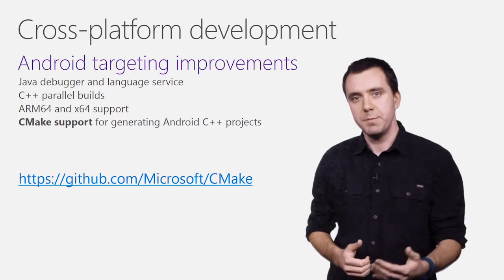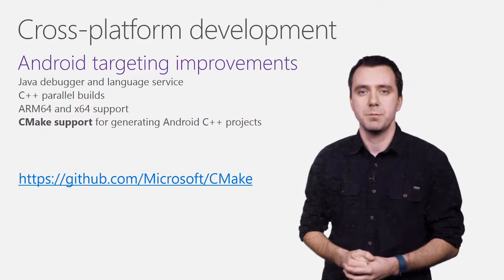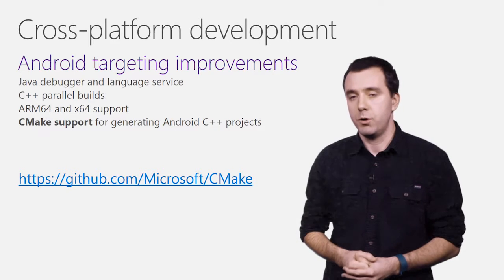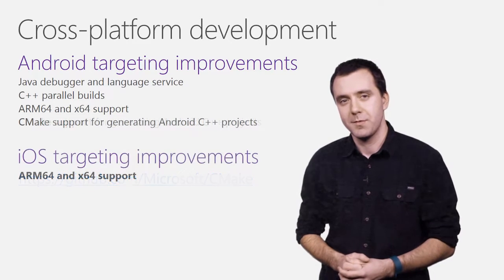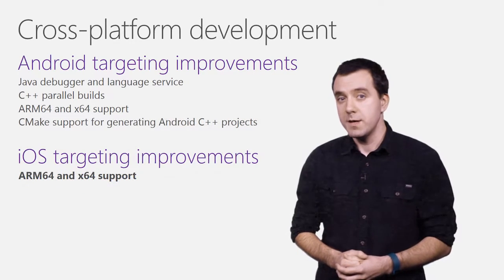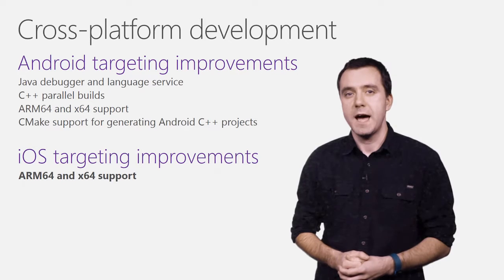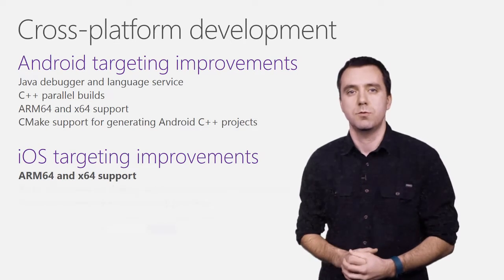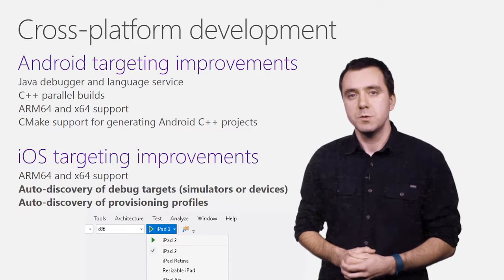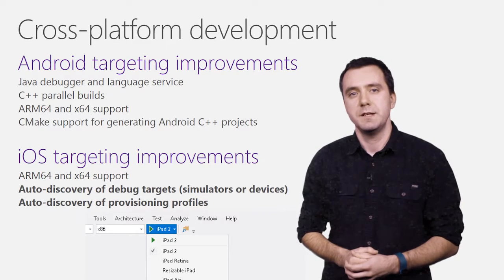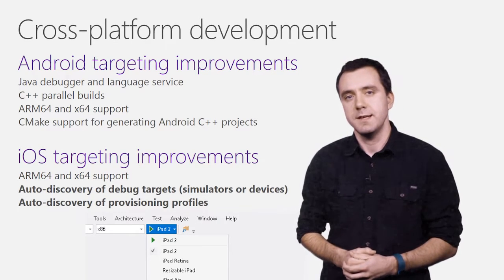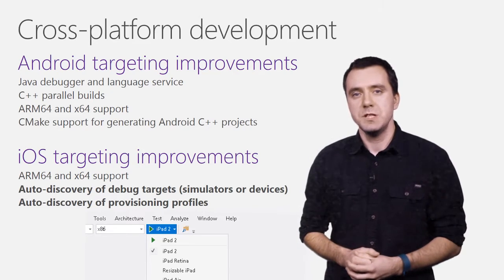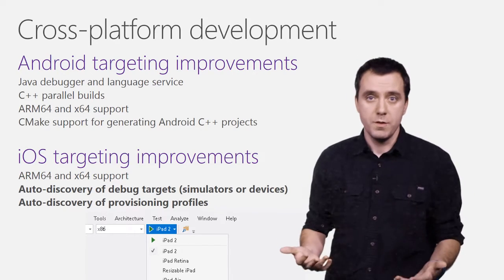While it will take a bit longer to make it into the official CMake bits, you can preview this support in the Microsoft CMake fork on GitHub. For iOS, similarly to Android, we're adding support for 64-bit platforms, ARM64 and X64. You'll also be able to easily target any of the simulators and iOS devices connected to your Mac, as well as pick the provisioning profile you want to use in case you have more than one.